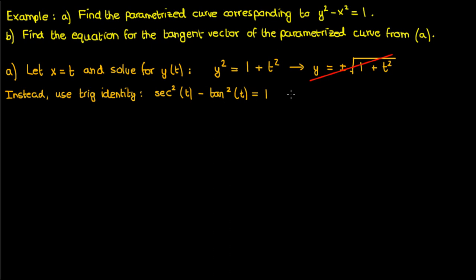So all we have to do for our parametrization is to let gamma of t which is x of t and y of t equal tangent t comma secant t. With this parametrization secant and tangent can both take on positive and negative values.